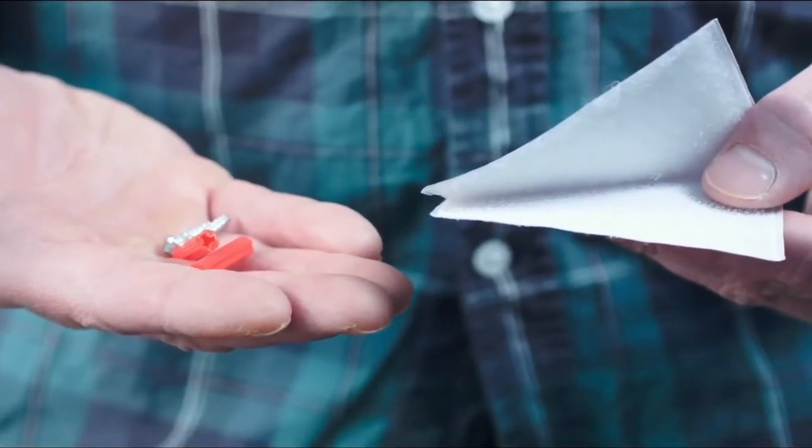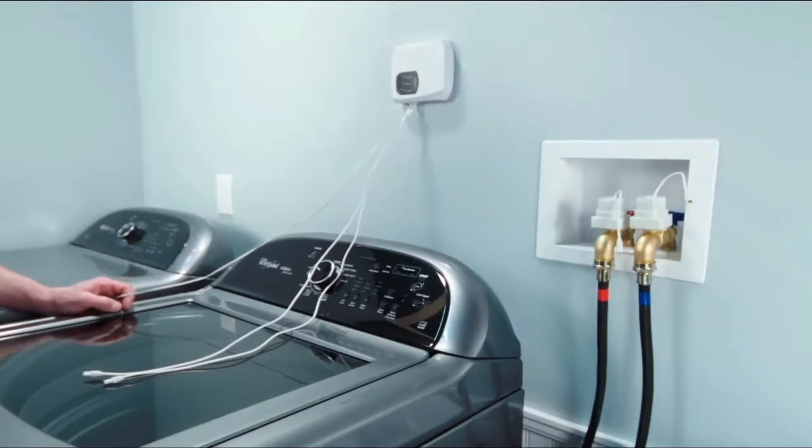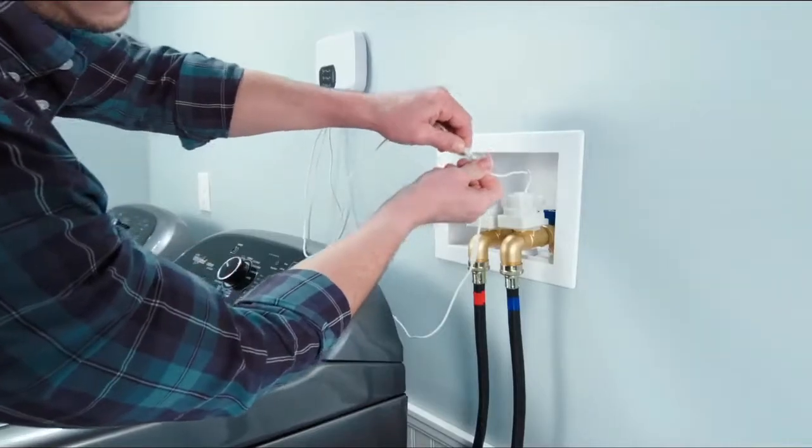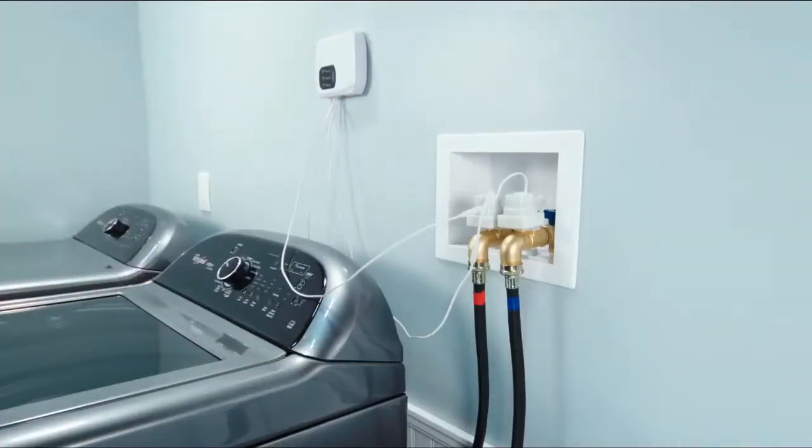Plug the six-pin connector end of the wire harness into the bottom of the control panel. Take the short round wire coming from the control panel, make sure the arrow on the side of each plug lines up with each other, and plug it into the wire coming from the Leak Smart valves.